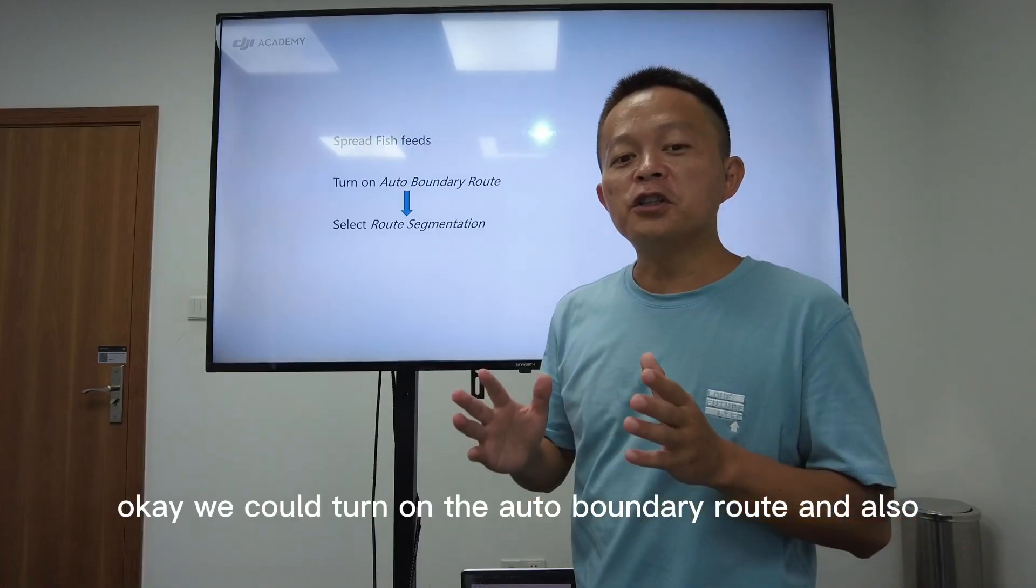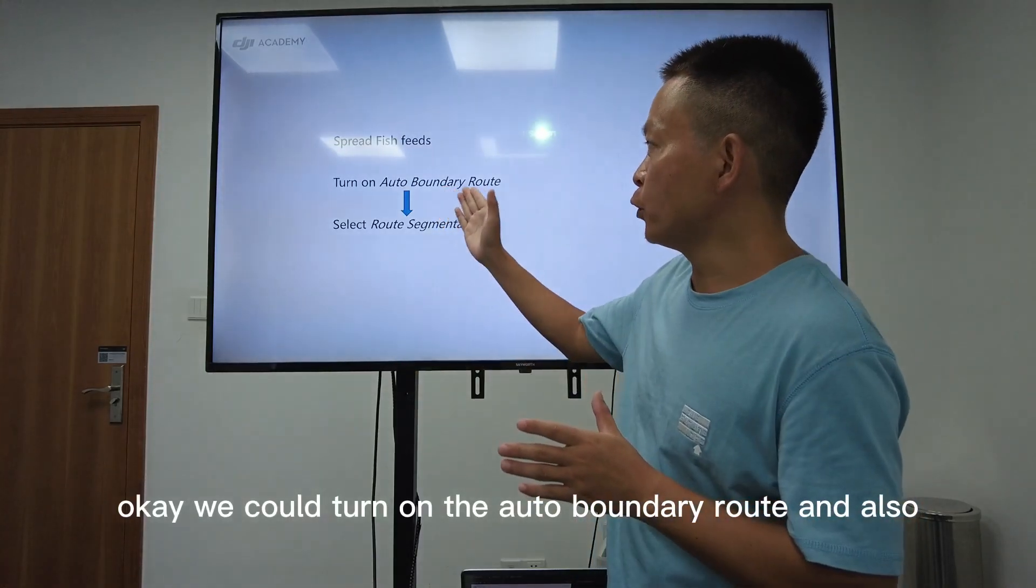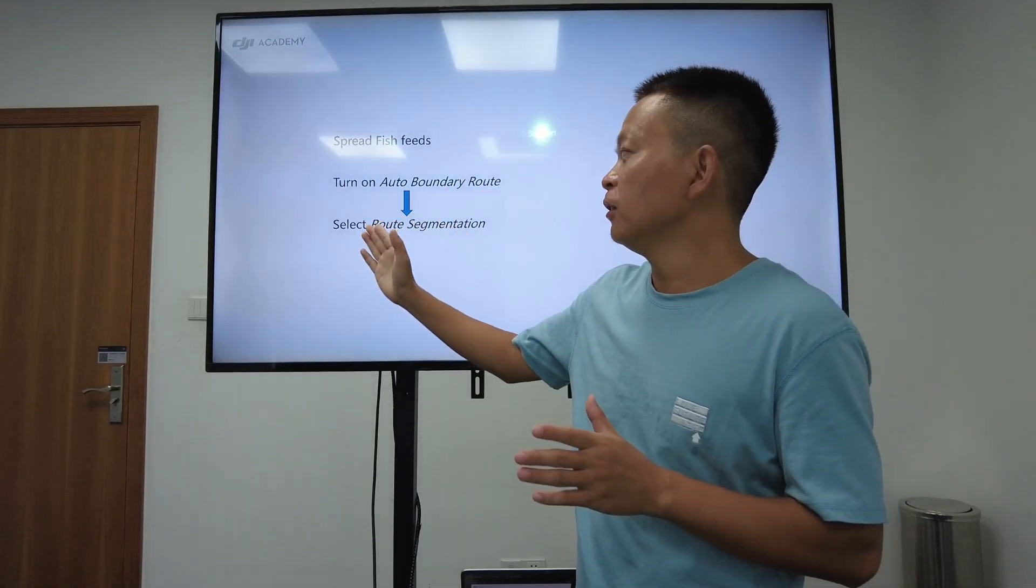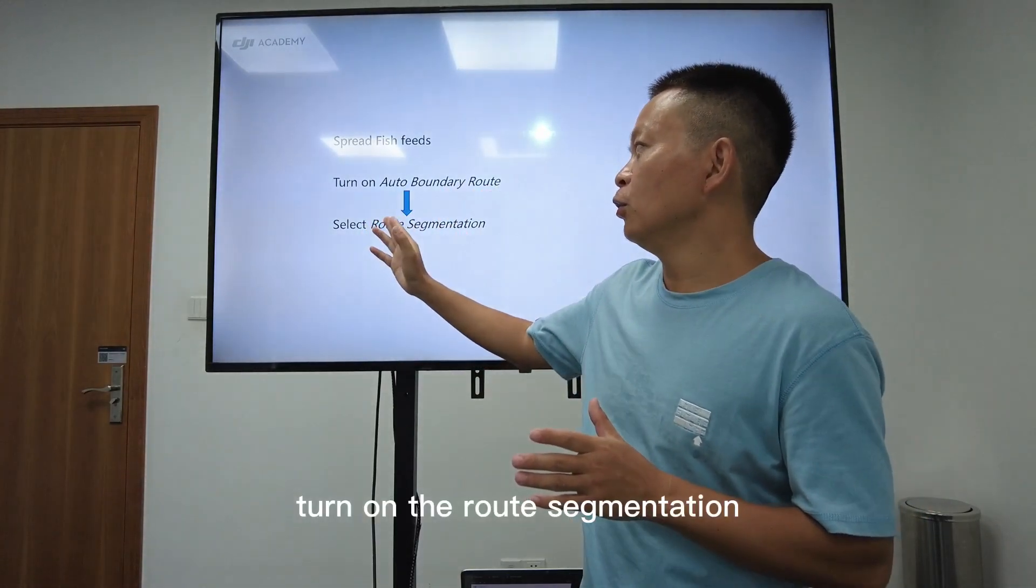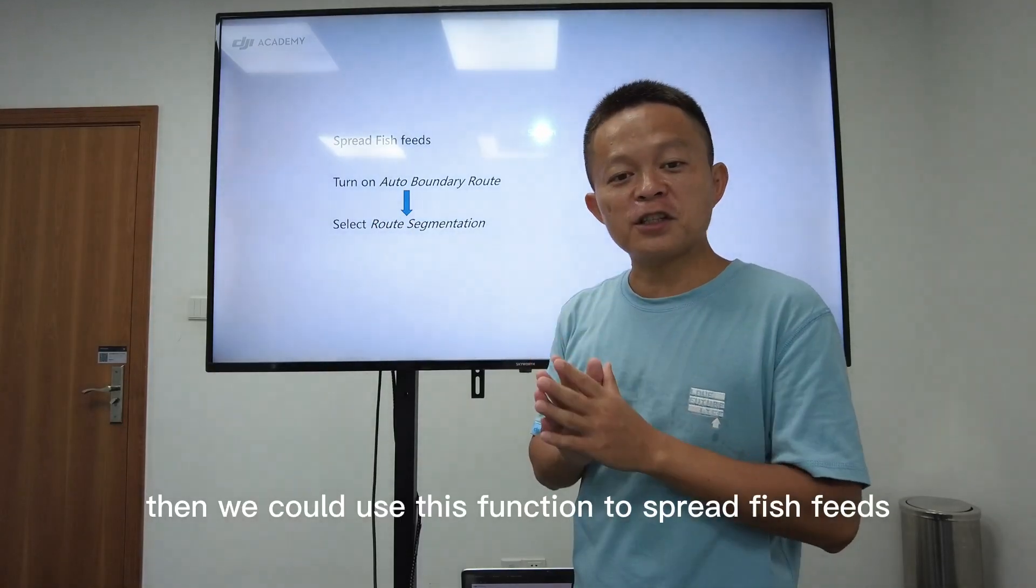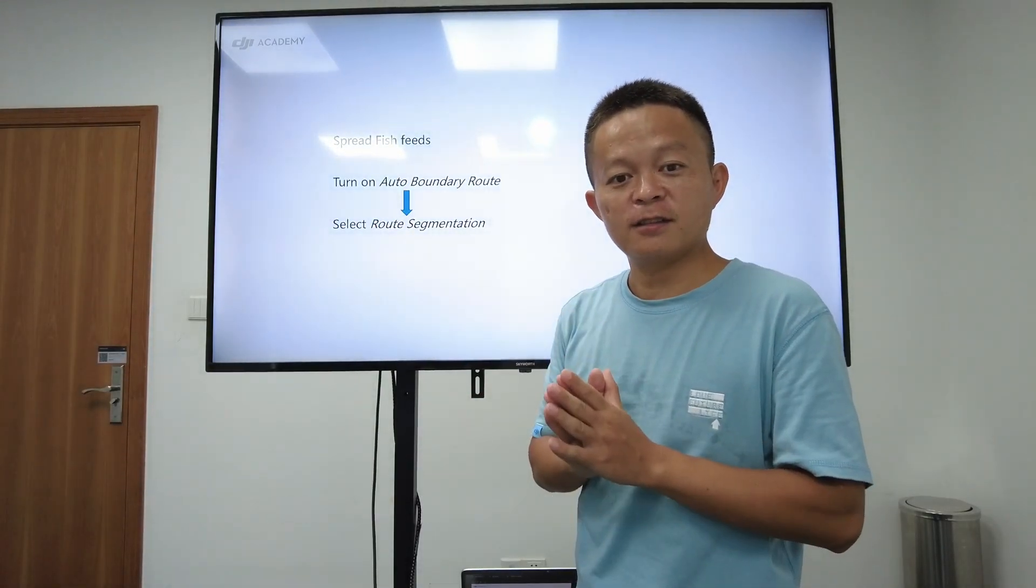We could turn on the auto boundary route and also turn on the route segmentation. Then we could use this function to spread fish feeds.